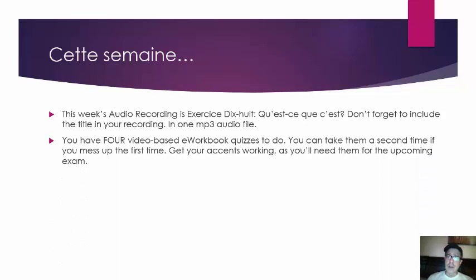You have four video-based e-workbook activities. They're little quizzes where you watch a video and answer some questions. You can take those again — if you mess up the first time, you can take it a second time. There's a submission review where you can check the right and wrong answers. Make sure you get your accents working this week; use those quizzes to practice typing your accents in a test, because you'll have to do that in the upcoming exam.